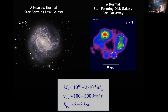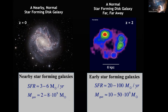Interestingly, with respect to global properties they are very similar. These galaxies have stellar masses of order 10^11 solar masses, they are fast rotating with rotation velocities of 100 to 300 km/s, and half-light radii of a few kiloparsecs — very similar to the low redshift counterpart. But when you look at star formation rates, they are very different. Nearby star-forming galaxies have rates of a few solar masses per year and gas masses of a few times 10^9 solar masses, whereas the young high-redshift galaxies have star formation rates a factor 10 larger, and gas mass also a factor 10 larger.